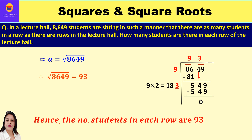In long division, the first step is to form pairs starting from the ones digit. The first pair is 49, then 86. The leftmost period is 86 — the largest number whose square is ≤ 86 is 9, since 9×9 = 81. So 86 − 81 = 5; bring down 49 to get new dividend 549. Double the quotient: 9×2 = 18; try digit 3, so 183×3 = 549, remainder 0. Therefore √8649 = 93, and the number of students in each row is 93.